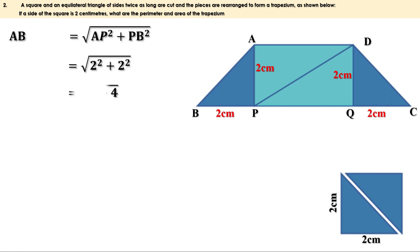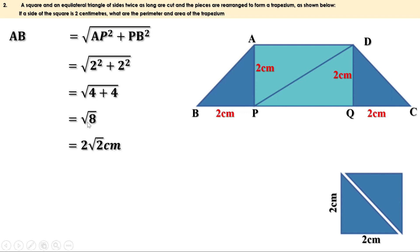So this can be written as root of 4 plus 4, which is root 8. Now 8 equals 4 into 2, so root 8 equals root of 4 into 2, which equals root 4 into root 2. Root 4 is 2, so this is 2 root 2. Therefore the length of AB is 2 root 2 centimeters. AB and CD are equal because they are equal triangles, so CD is also 2 root 2 centimeters.